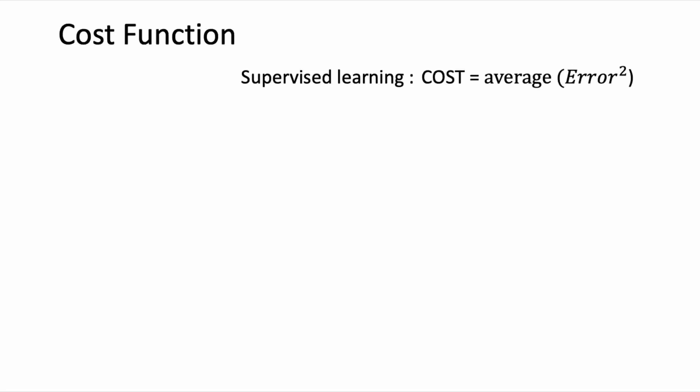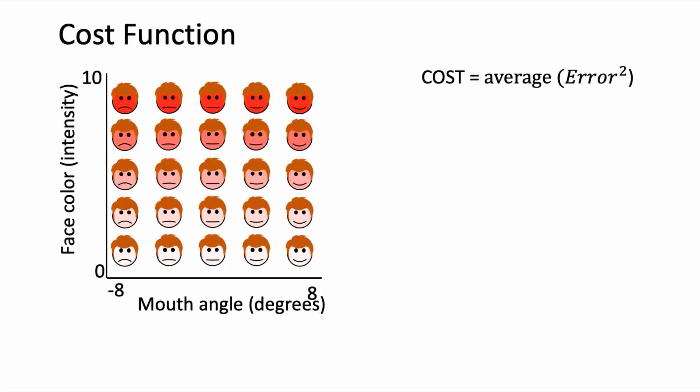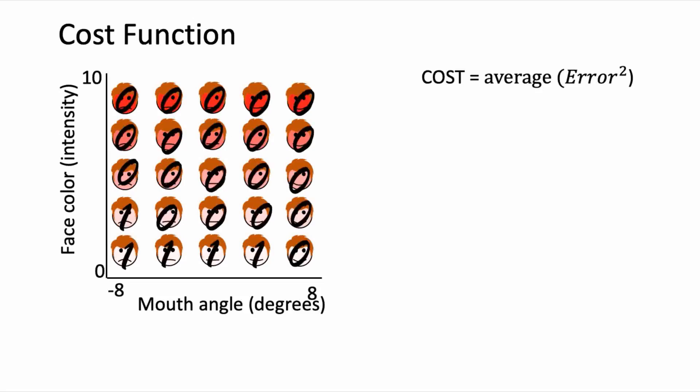Let's look at an example evaluating this cost function using our problem of predicting our friend's bluffing at poker. Let's take the 2D version of our bluffing model, where we had both mouth angle and face color as inputs. Let's say that the current state of our model was that it's not very accurate at predicting our labels, and the current weights and bias values were such that these were the predictions it was outputting — this pattern of zeros and ones shown. But what we want the model to output is where all the data points within the red triangle are where our friend is bluffing, outputting a 1, and a 0 everywhere else.